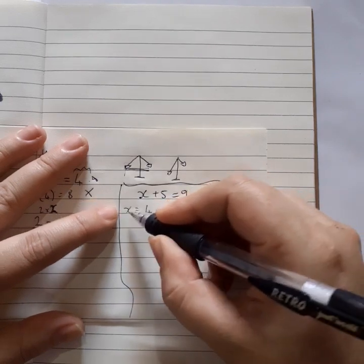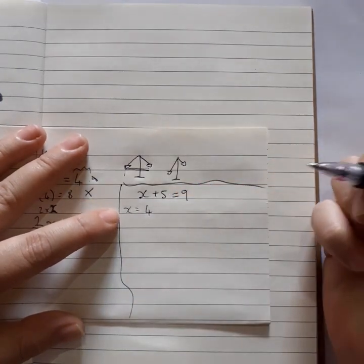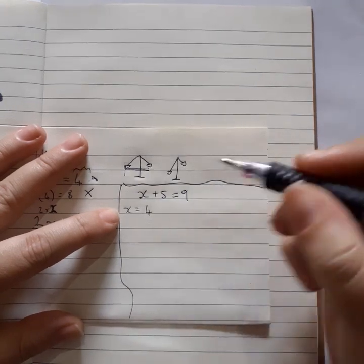So x equals 4. 4 plus 5 is 9. Okay, but how did we do it mathematically? What's the rule?